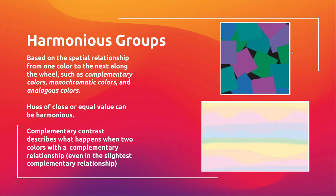You can have harmonious groups based on spatial relationships from one color to the next along the color wheel. They don't have to be right next to each other like analogous colors — they can include complementary, monochromatic, and analogous colors. Hues of close or even equal values can be considered harmonious. Similar complementary colors will have a reaction, but we're talking about harmonious groups here.